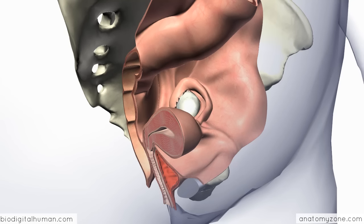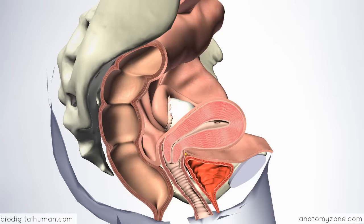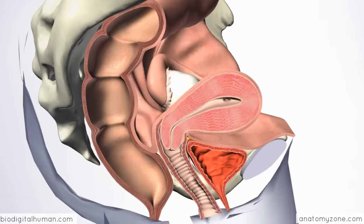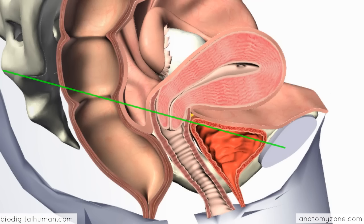If I just rotate this cross section of the pelvis, you can see we have the bladder anteriorly, then the vagina, and then the rectum and the anal canal posteriorly. What I'd like to do is take a horizontal section through this level and look at how the fascia forms ligaments around these viscera.